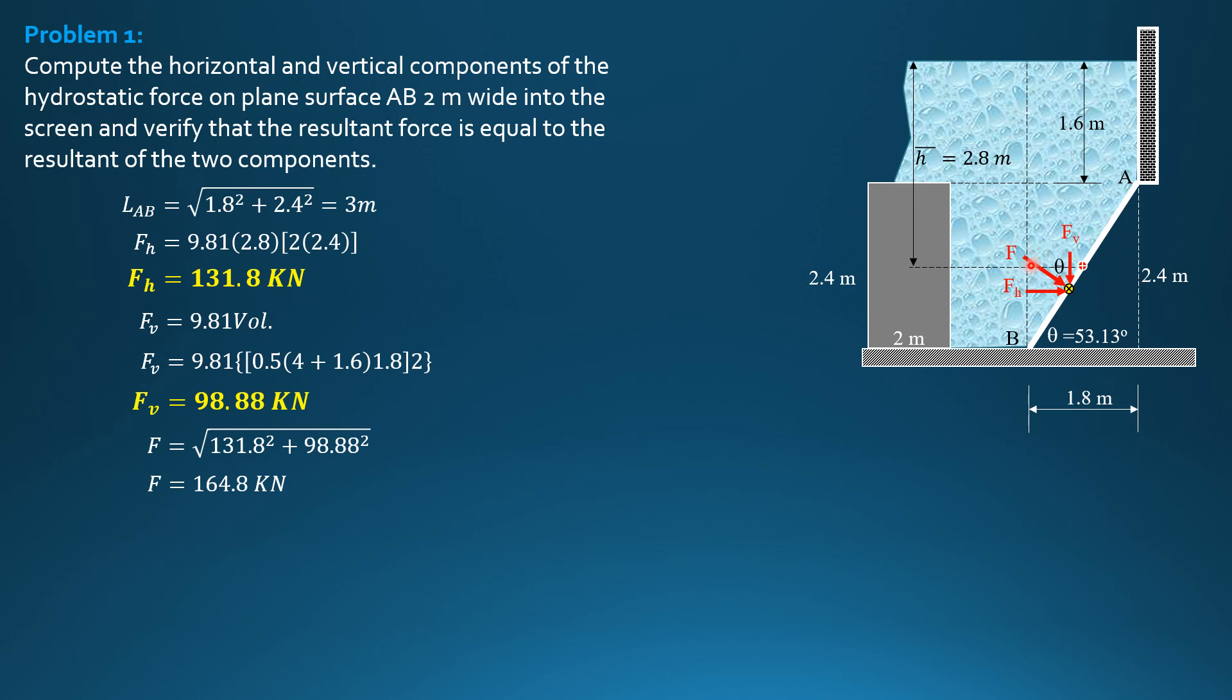Now, we can compute F directly by the formula: specific weight of liquid water times H-bar times the area of the gate. The area of the gate is 2 meters by 3 meters, or 6 square meters. H-bar is equal to 1.6 plus 2.4 over 2, so it's still 2.8. So F is 9.81 times 2.8 times area 2 by 3. So F is equal to 164.8, same as the resultant of FH and FV.